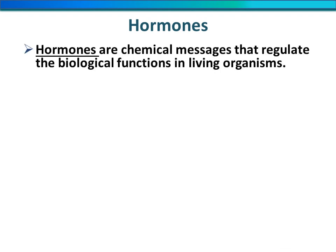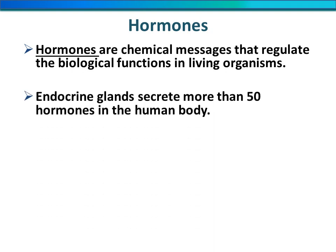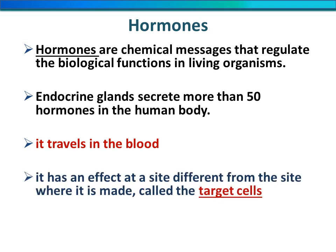What is meant by hormones? Hormones are chemical messages that regulate the biological functions in all living organisms. Endocrine glands secrete more than 50 hormones in the human body. Hormones travel in the blood and have their effect at a site different from where they are made, called the target cells. So the only pathway for hormones is the blood, and the cells that the hormone affects are called target cells.